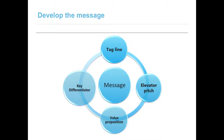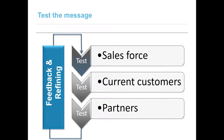You want to repeat your message over and over again. There will be different levels of detail — for example, the tagline is the shortest, followed by the elevator pitch, then a brochure that includes the key differentiators and value proposition. They all have to say the same thing; they are just substantiated by different levels of information. Before you release the message, it's good to test it first. Good testers are your sales force, current customers known to give you good and honest feedback, and your partners.